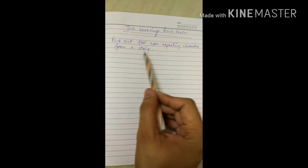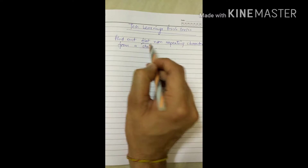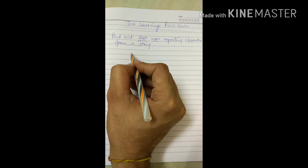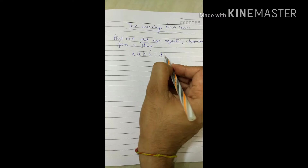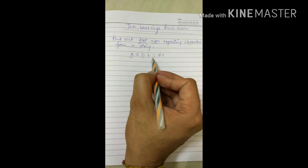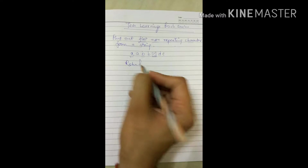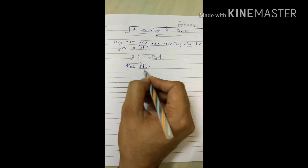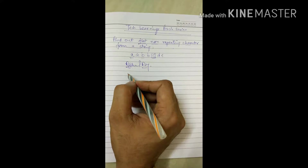Coming to the puzzle — you have to find out the first non-repeating character from a string. Suppose your string contains 'a a b b c d e'. Since 'a' is repeating and 'b' is repeating, the first non-repeating character is 'c'. Let's take one more example: suppose the name is 'Rahul'. The first non-repeating character is 'R'. If the name is 'Rahul Roy', the first non-repeating character would be 'a'.